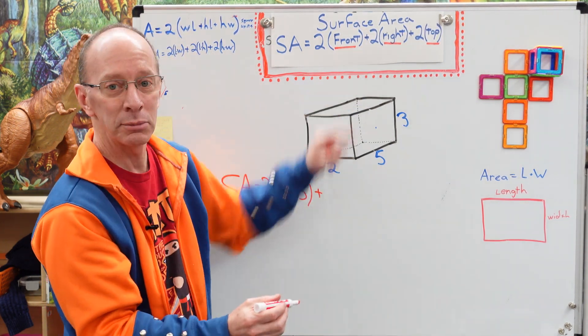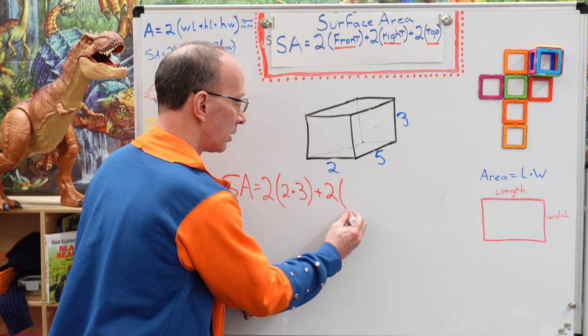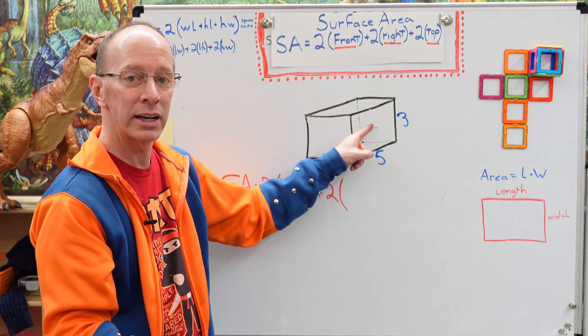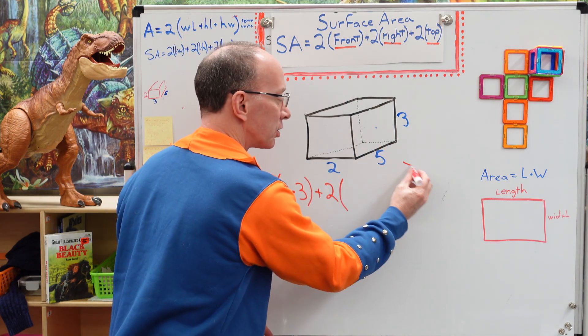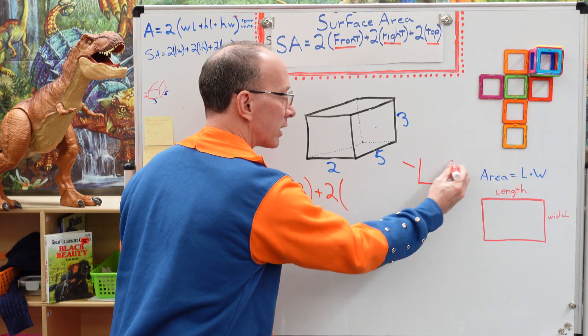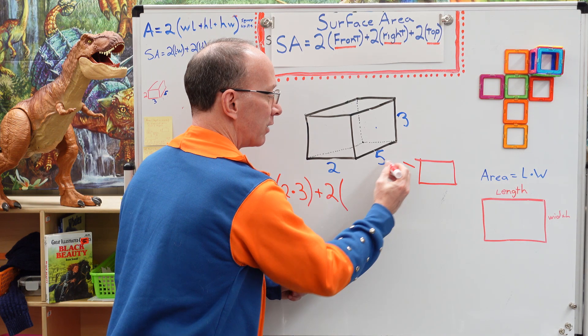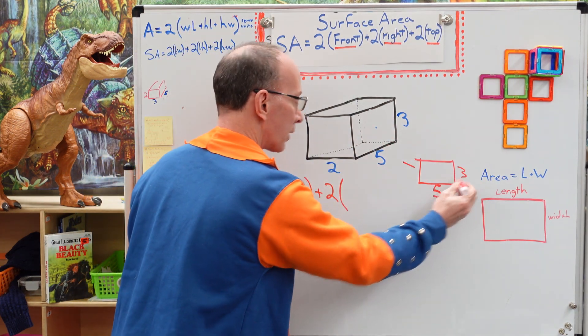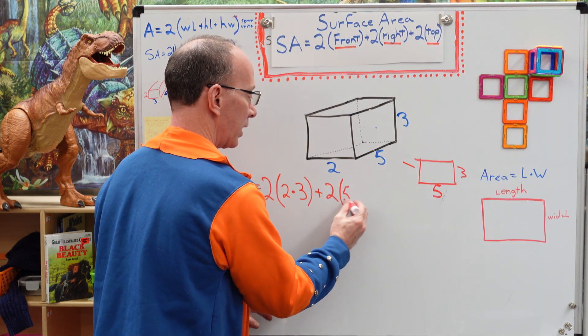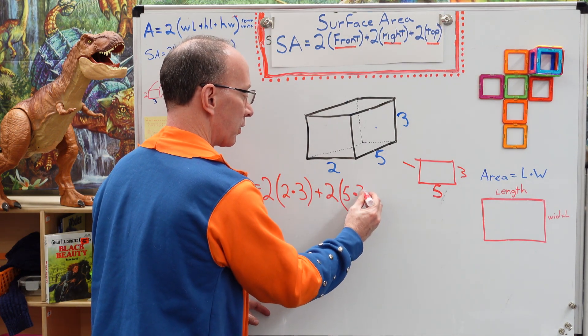So let's move on. We have two times the right. What is the right? It's this one right here. So what I'm going to do is I'm going to pull this little rectangle out just to kind of show you a little bit here. Here's our rectangle here. This side right here, the length is five, and this side right here is three. So we have five times three.